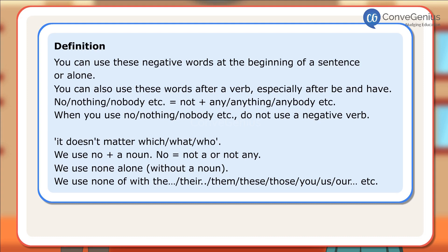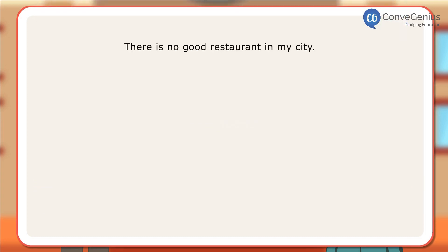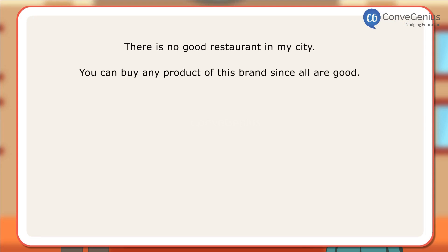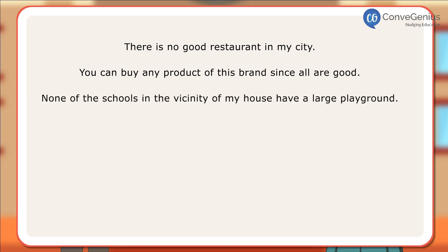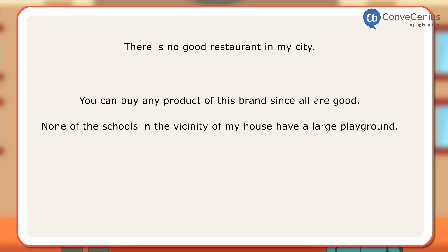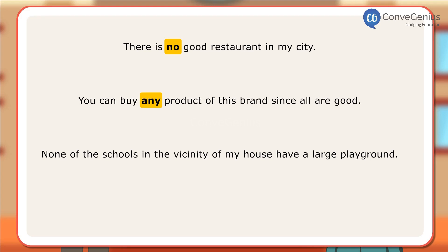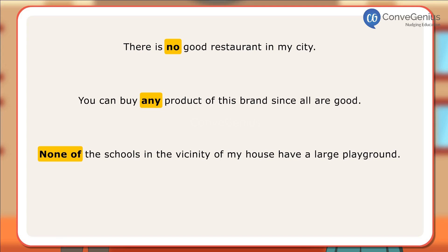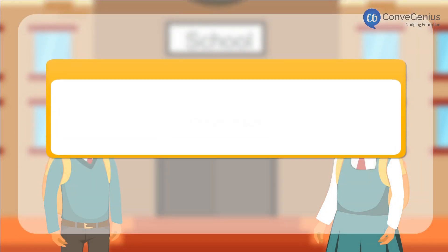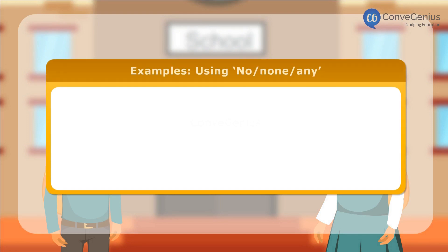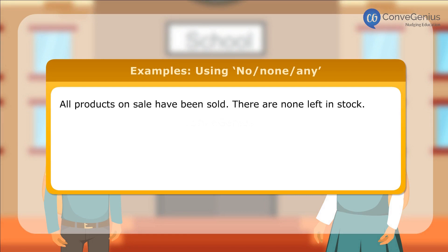Let us look at a few sentences. 'There is no good restaurant in my city.' 'You can buy any product of this brand since all are good.' 'None of the schools in the vicinity of my house have a large playground.' In the first sentence, 'no' has been used after the verb. In the second sentence, 'any' has been used without 'not,' which means it doesn't matter which product. In the third sentence, 'none of' has 'the' after it to speak about something negative.